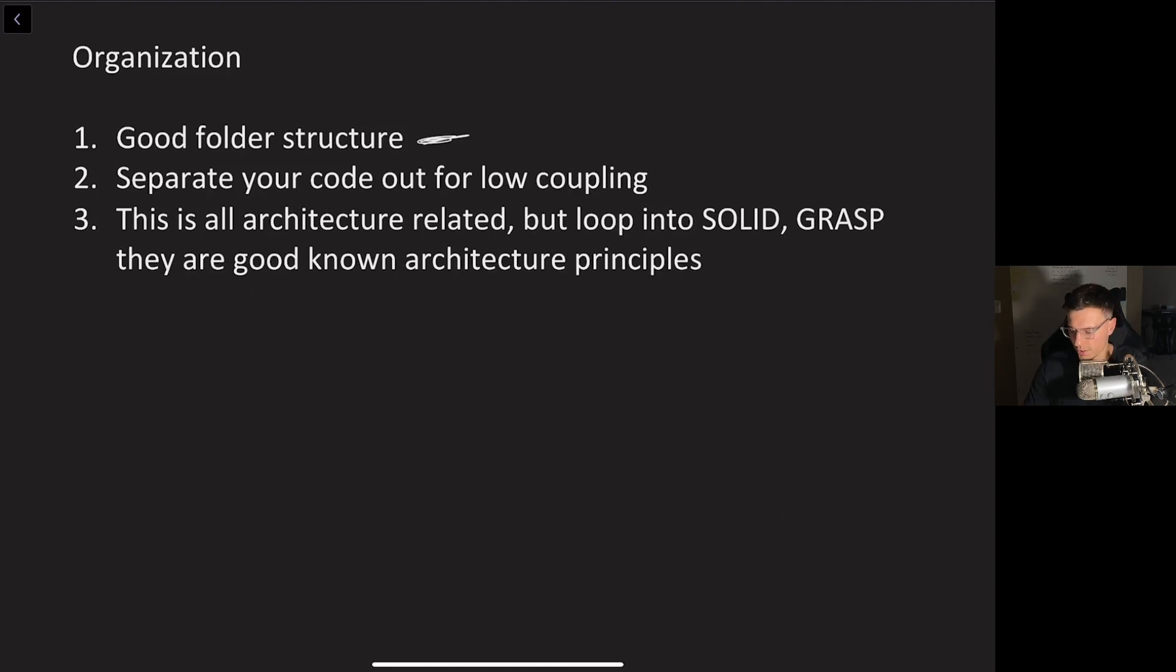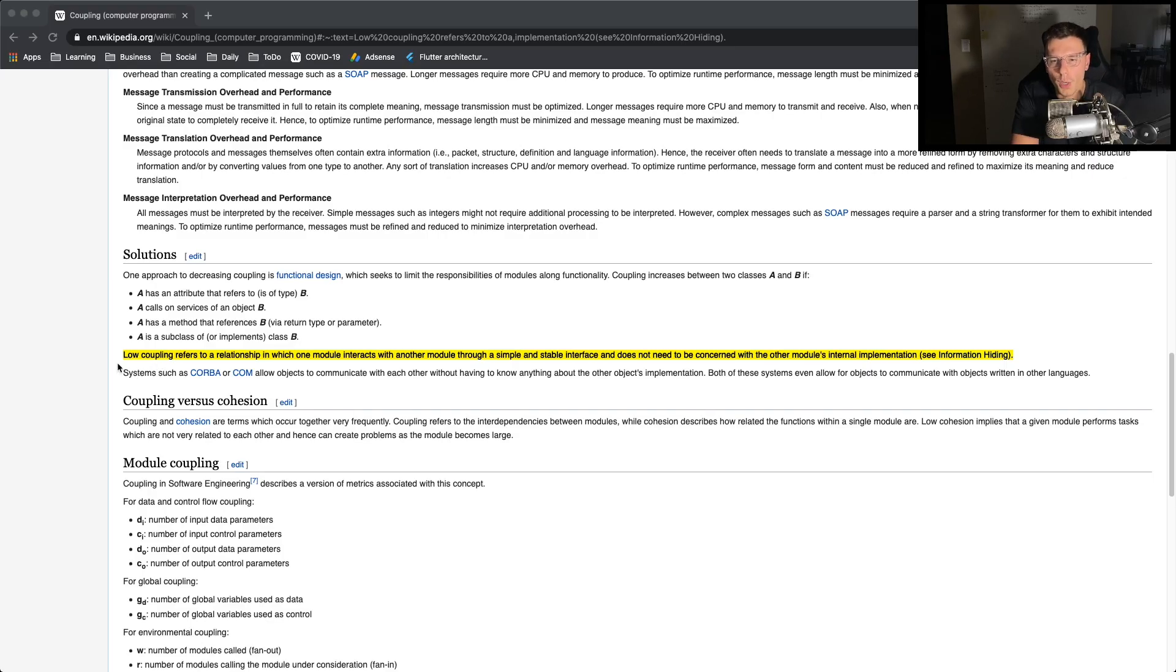Then number two for organization, make sure you separate your code as much as you can for low coupling. Now if you don't know what low coupling is, low coupling refers to a relationship in which one module interacts with another module through a simple and stable interface and does not need to be concerned with other modules internal implementations. This basically means separate your code as much as you can and make sure the interaction between them is as simple as can be.